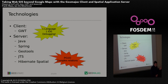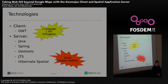Technology-wise, we have GWT and Java. We use Spring a lot on the backend — it's all Spring and Bean based. We use GeoTools, JTS of course, and Hibernate Spatial, which is actually also a spin-off project of ours. We were already using Hibernate and decided to add the spatial component to it.